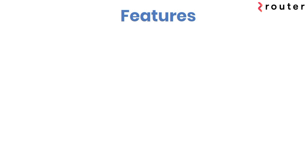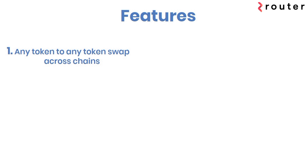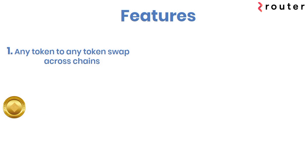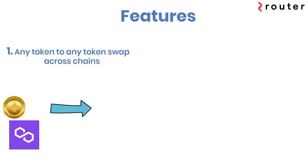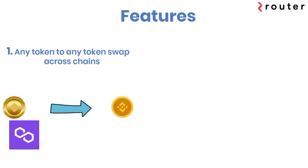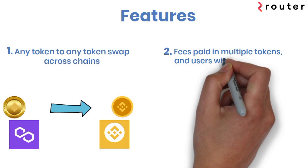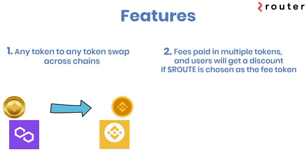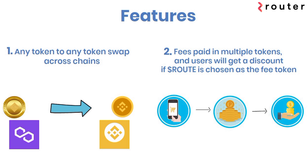Let's talk about the amazing features of Router. Imagine swapping DAI on Polygon to BNB on Binance Smart Chain, or swapping on Ethereum to DeFi on Fantom. Router is very flexible when it comes to fees — you can choose between multiple options to pay the fee, and you will receive a fee discount if you choose the Route token to pay the fees.